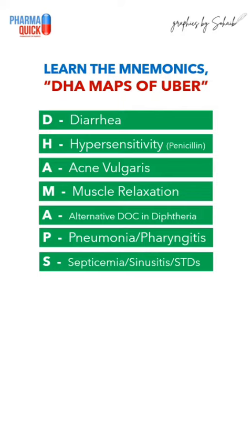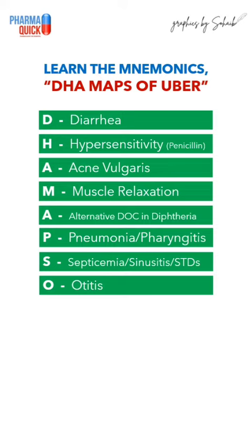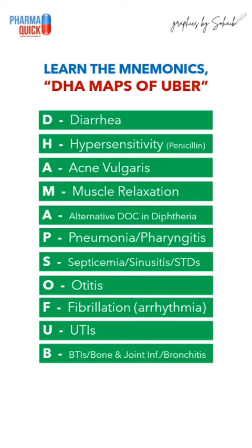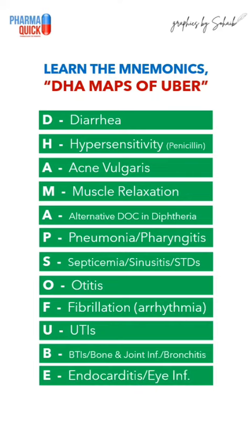S stands for septicemia, sinusitis, and sexually transmitted diseases. ALL stands for otitis. F for fibrillation. U in uber stands for urinary tract infections, B for biliary tract infections, bone and joint infections, and bronchitis.